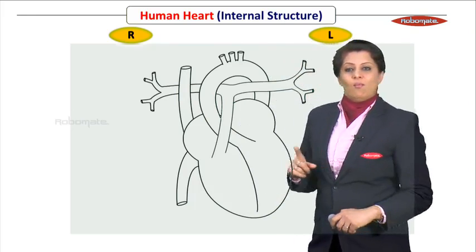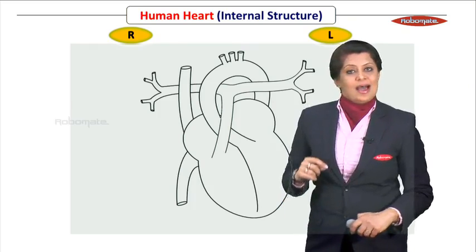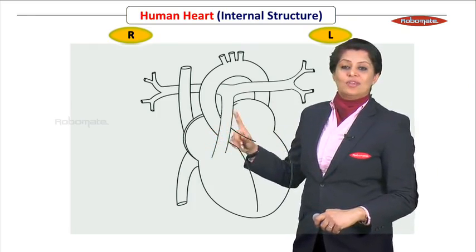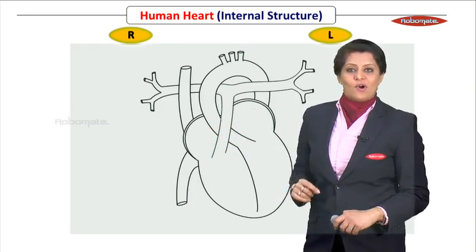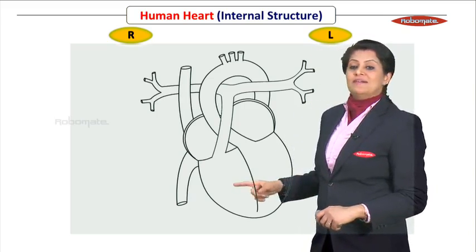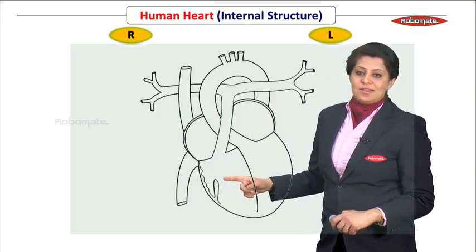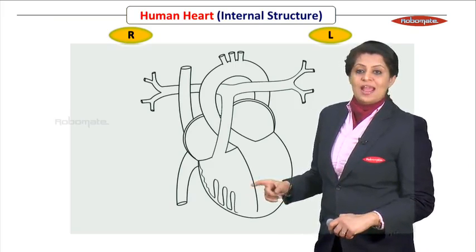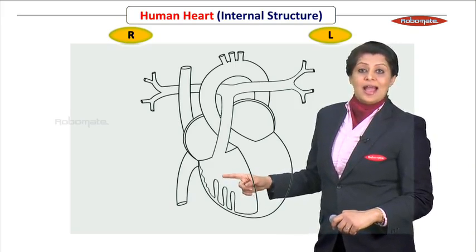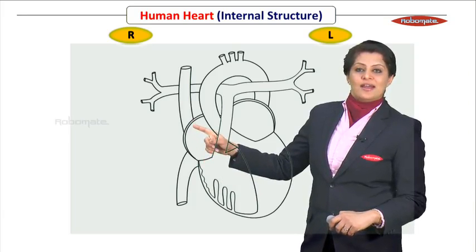Now observe the walls of all four chambers. You need to draw the walls. Make thinner walls for the atria — the atria have got thin walls compared to the ventricle. Observe the wall of the ventricle: it is uneven because of muscular ridges, and there are three papillary muscles also present. The right ventricle wall is thicker than the wall of the right atrium.